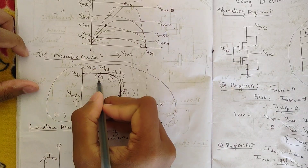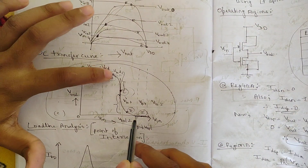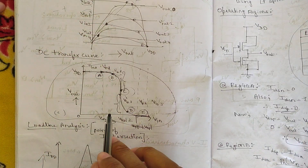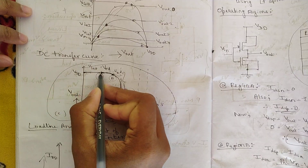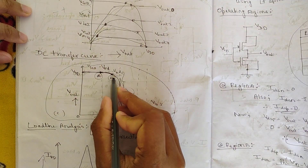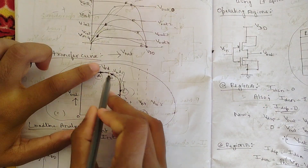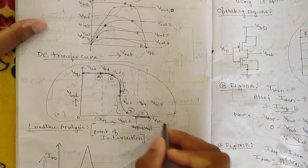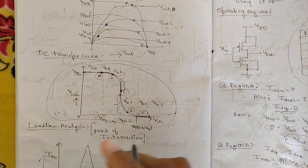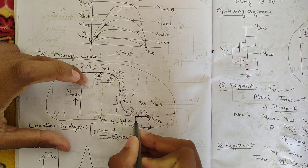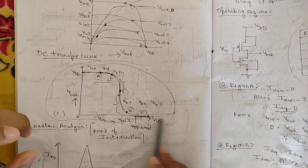The DC transfer curve has five operating regions: A, B, C, D, and E. Regions A and E are inversely opposite to each other; regions B and D are inversely opposite; region C is the transition. From VDD to A the output is constant; A to B shows a slight change; B to C shows a drastic change; C to D mirrors that drastic change inversely; D to E mirrors A to B; and after E the output is again constant.